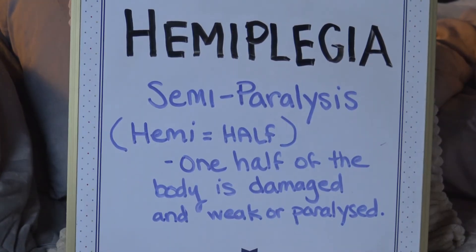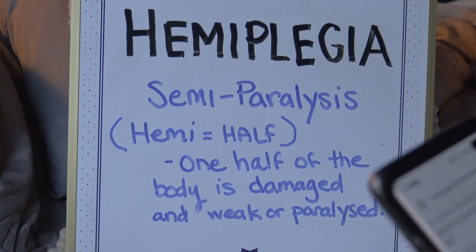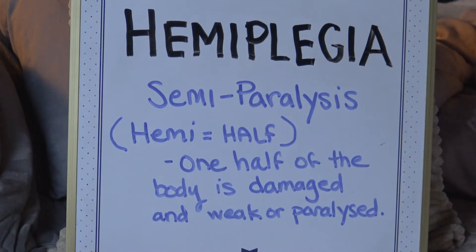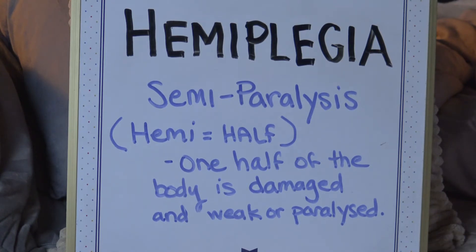Hemiplegia — this is semi-paralysis. It is usually the result of a stroke or some kind of brain damage where half of your body is either weakened or paralyzed. So hemiplegia is one half of your body is paralyzed.